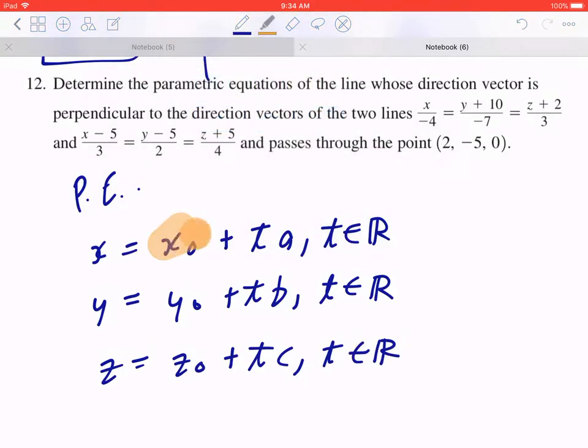When you think about x₀, y₀, and z₀, that's a point on this line, and you're given the point to be (2, -5, 0).